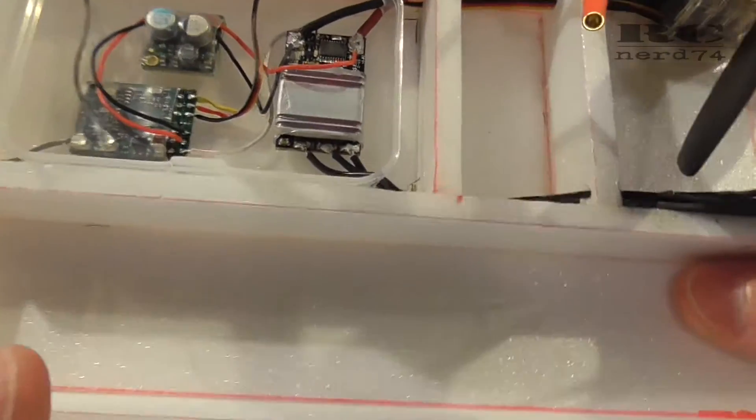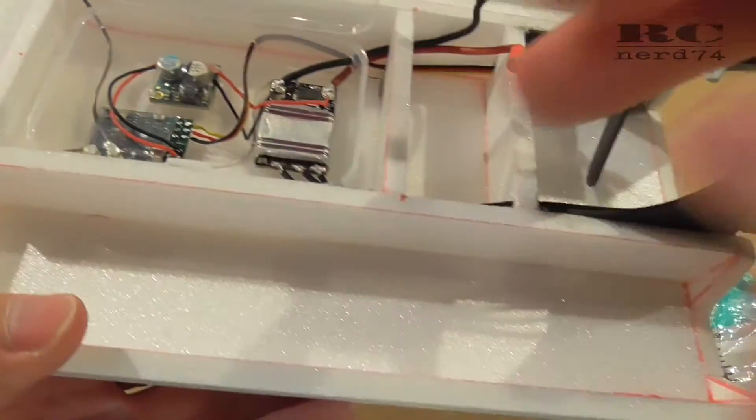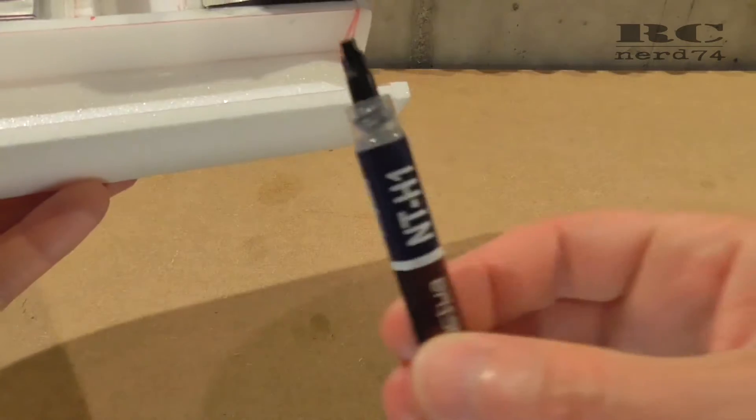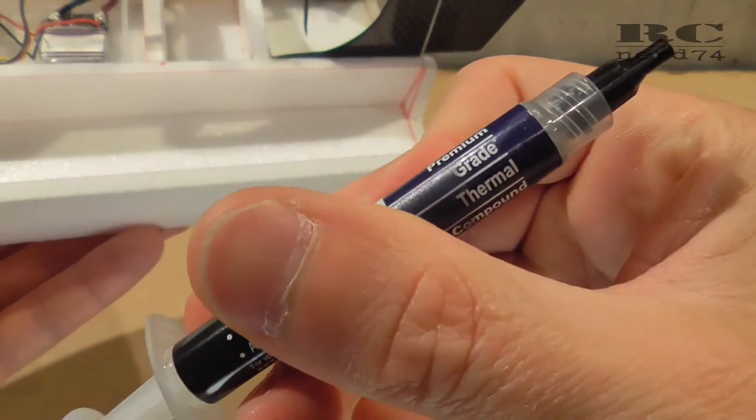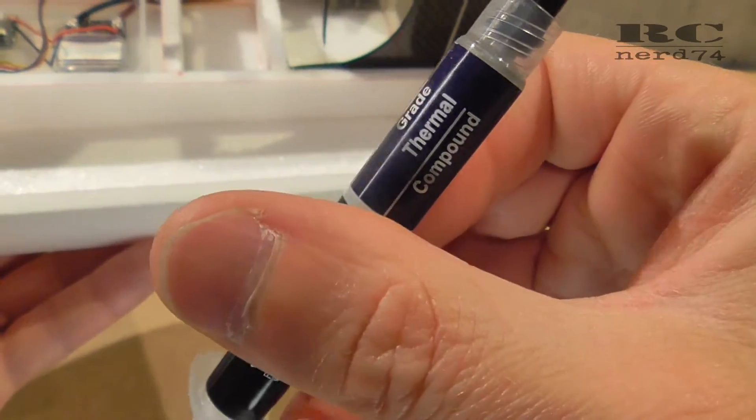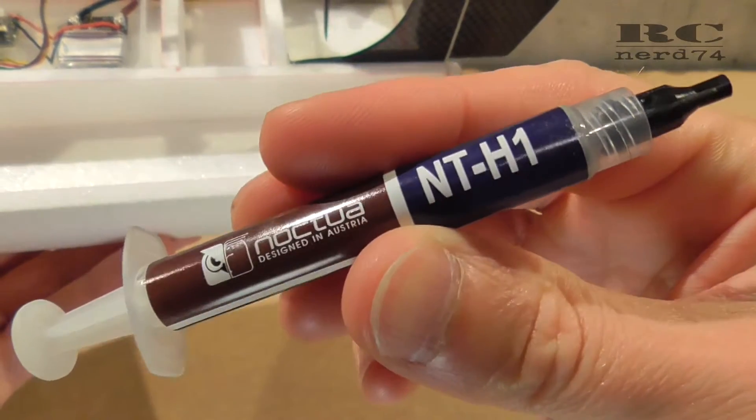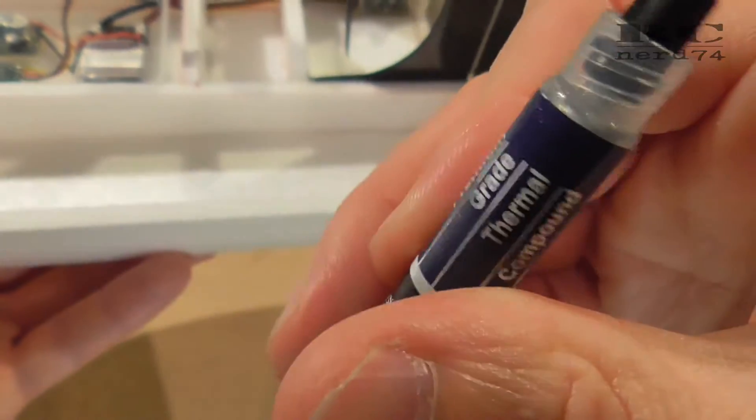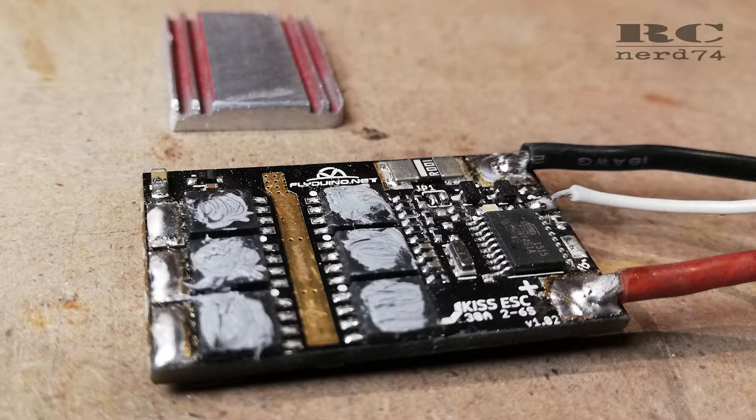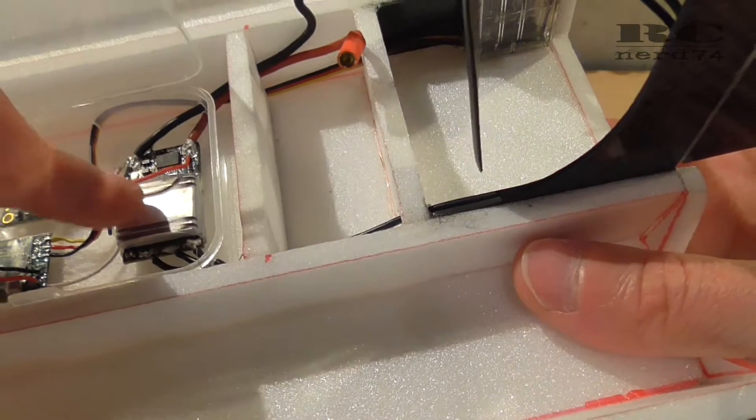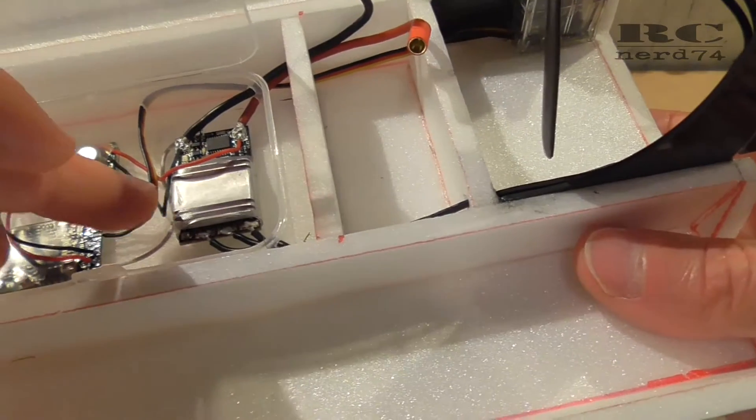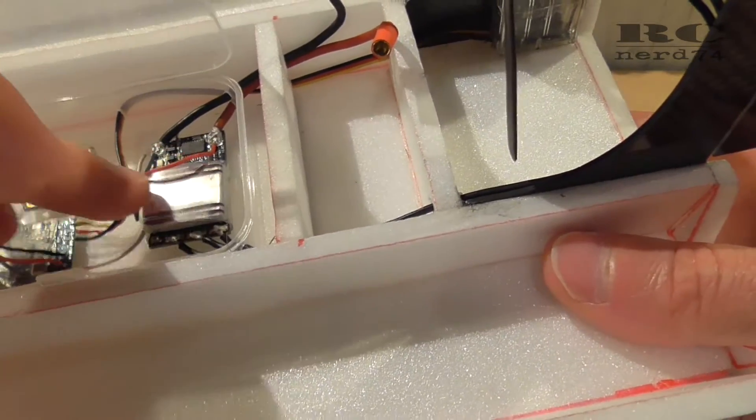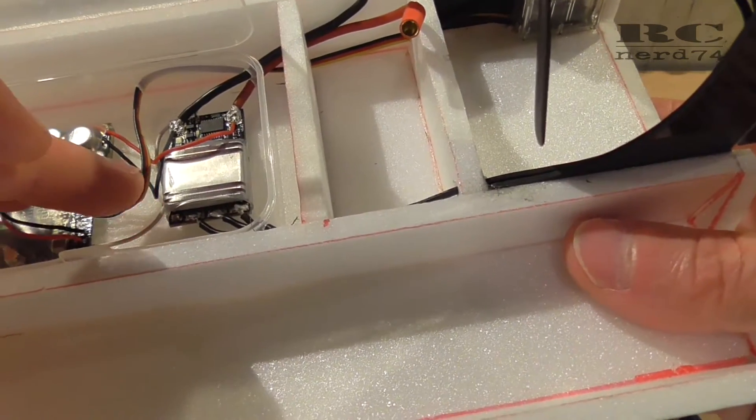To transfer the heat better into the cooling aluminum I used some compound which regularly is used for CPUs for computers. This also works perfectly for fets on an ESC to transfer the heat into the cooling element and I also fixed this with some clear shrink tube.